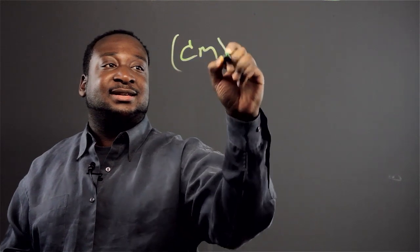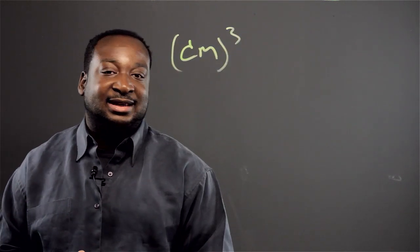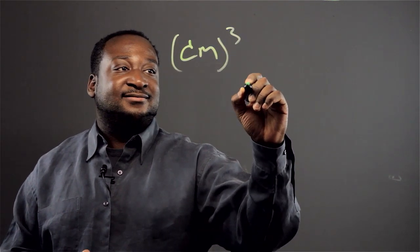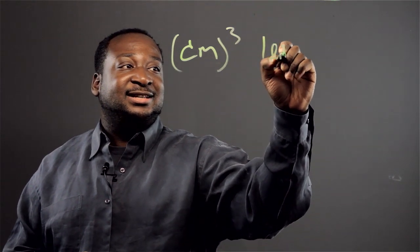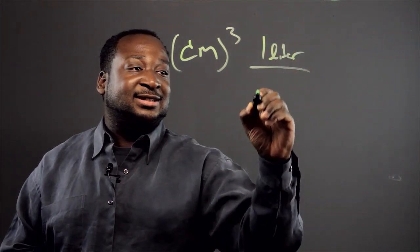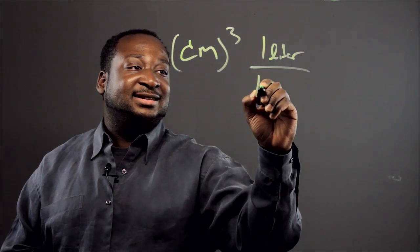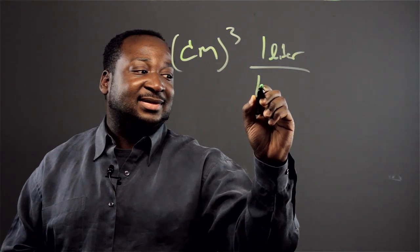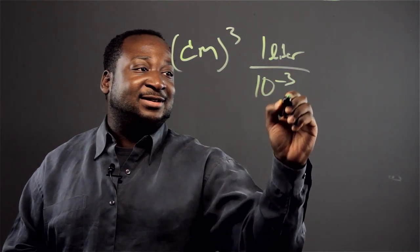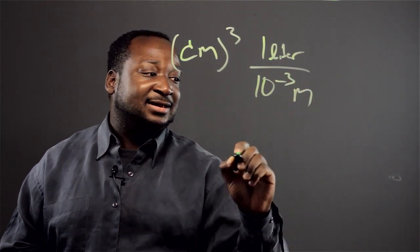Now we have centimeters cubed and we know that one liter is equivalent to 10 to the negative 3 meters cubed.